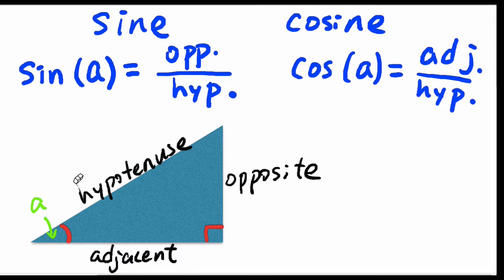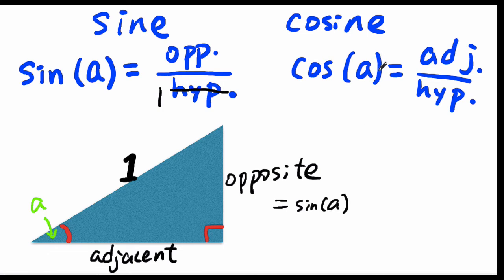A very important special case is when the hypotenuse is 1. This simplifies a couple things, because now sine of A is just the opposite side. The opposite side equals sine of A. For the same reason, the adjacent side equals the cosine of A.